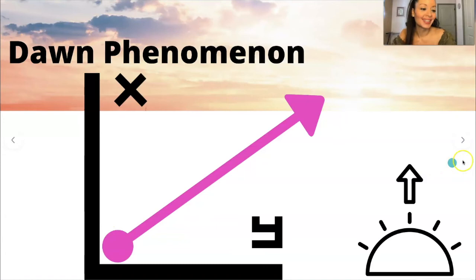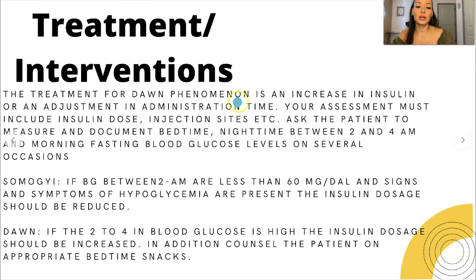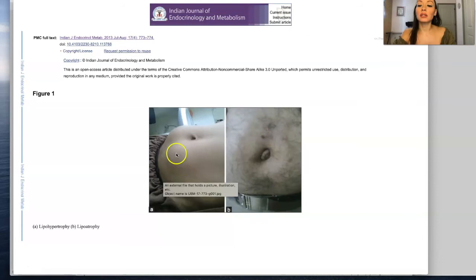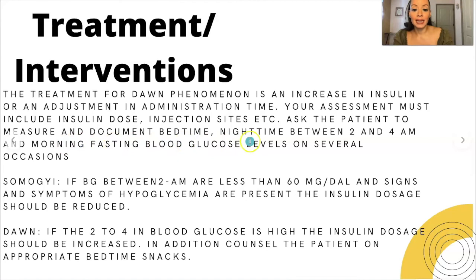Treatment interventions: the treatment for Dawn phenomenon is an increase in insulin or an adjustment in administration time. Your assessment must include insulin dose, injection sites, etc. Make sure they're injecting in the right places, because if they're injecting in the same area, they can get lipodystrophy and their insulin will not be absorbed — essentially creating a fat pocket that doesn't absorb insulin. Ask the patient to measure their glucose at bedtime, nighttime between 2 and 4 in the morning, and fasting blood glucose levels on several occasions.